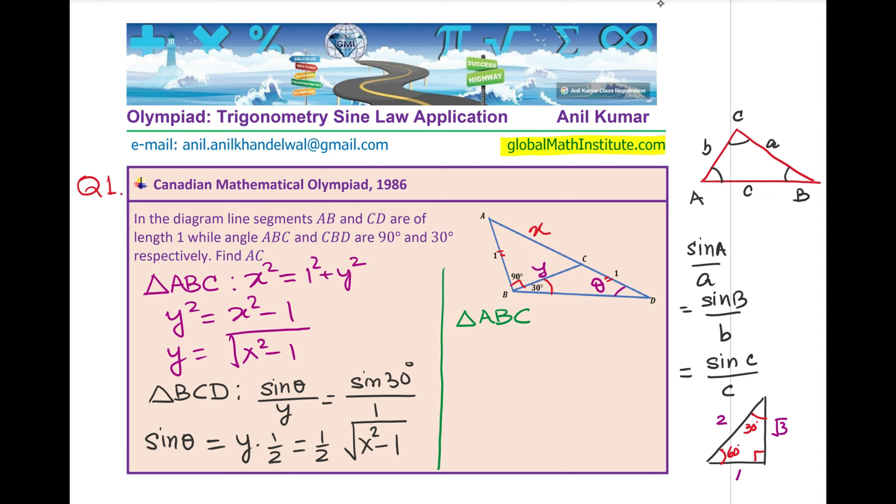We know the side opposite to this is X plus 1. Correct. And, therefore, I could write this as sin of 90 plus 30 degrees or 120 degrees divided by opposite side X plus 1 should be equal to sin theta divided by the opposite side which is 1. Now, sin 90 plus theta is equal to cos 30, right? So, this could be written as cos 30 over X plus 1 equals to sin theta. So, we get another value of sin theta which now is also in terms of X.